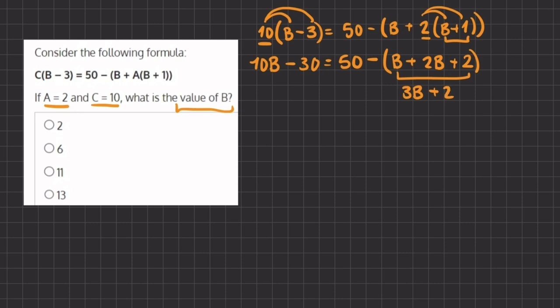Alright, so now let's rewrite our expression. We have 10b minus 30 equals 50, minus the inside of our parentheses, which we just simplified.